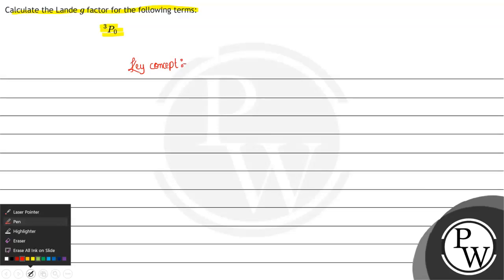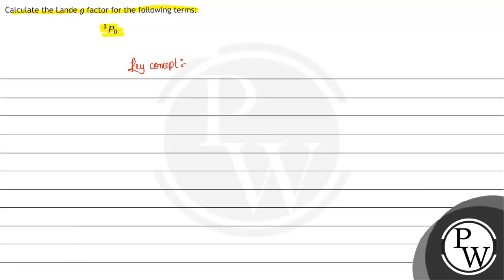Here the key concept is: the value for g is 1 plus j(j+1) plus s(s+1) minus l(l+1) divided by 2j(j+1), where j is total angular momentum.